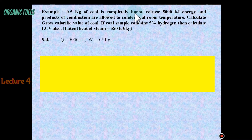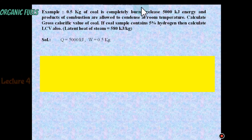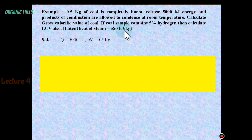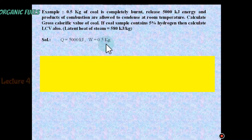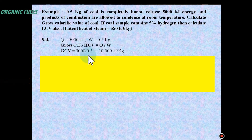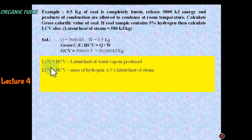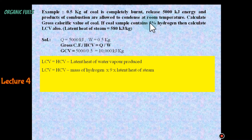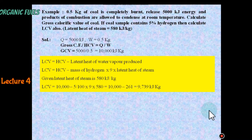For example, 0.5 kg of coal is completely burned, releasing 5000 kJ of energy, and the products of combustion are allowed to condense at room temperature. Calculate the gross calorific value of coal. If coal contains 5% hydrogen, also calculate the LCV. Given: latent heat of steam = 580 kJ per kg. Gross calorific value = Q ÷ W = 5000 ÷ 0.5 = 10,000 kJ per kg. Using LCV = HCV − (mass of hydrogen × 9 × latent heat of steam) = 10,000 − (0.05 × 9 × 550), LCV = 9,739 kJ per kg.